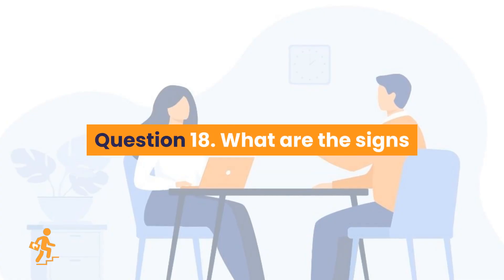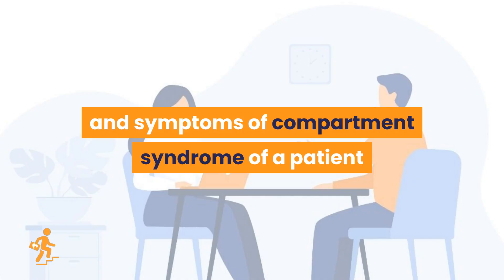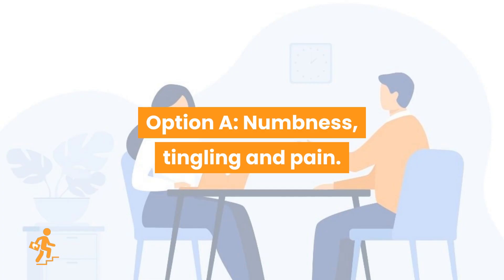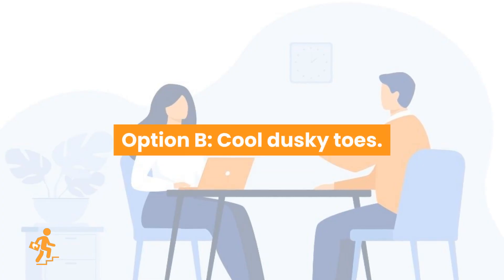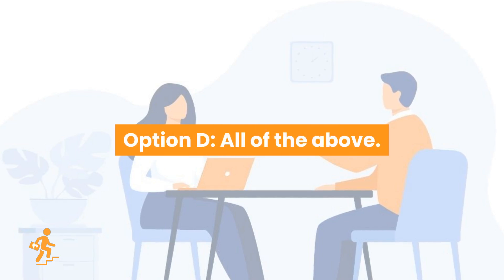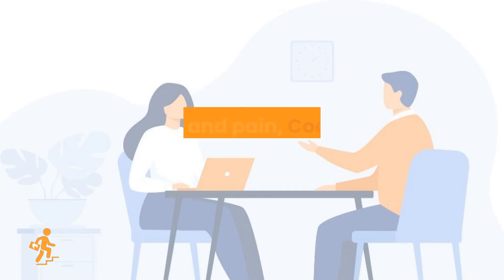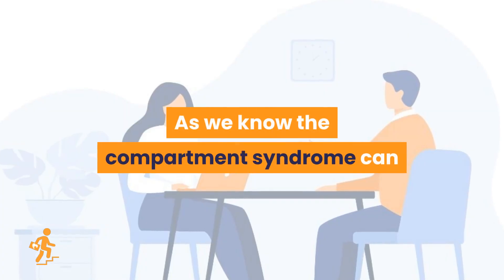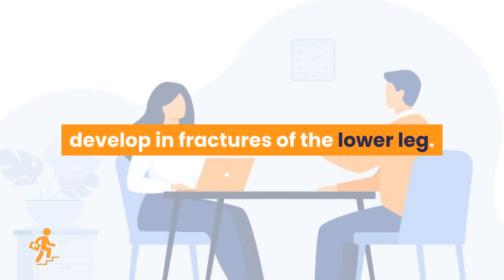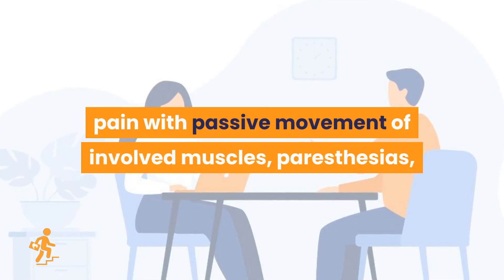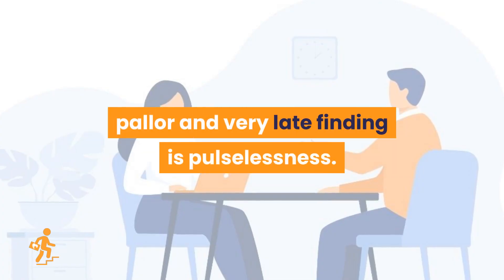Question 18. What are the signs and symptoms of compartment syndrome in a patient with post-op repair of tibia and fibula? Option A: Numbness, tingling, and pain. Option B: Cool dusky toes. Option C: Toes swelling. Option D: All of the above. Correct answer is Option D. Compartment syndrome can develop in fractures of the lower leg. Signs include crescendo symptoms, pain with passive movement, paresthesias, pallor, and very late finding is pulselessness.